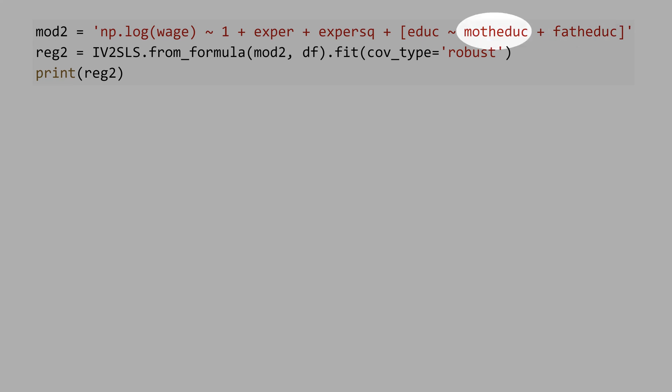Usually, if you use just one instrumental variable, we call it IV estimation. And if you use more than one IV, we call this two-step least square. And this line of code is the same as the previous example.